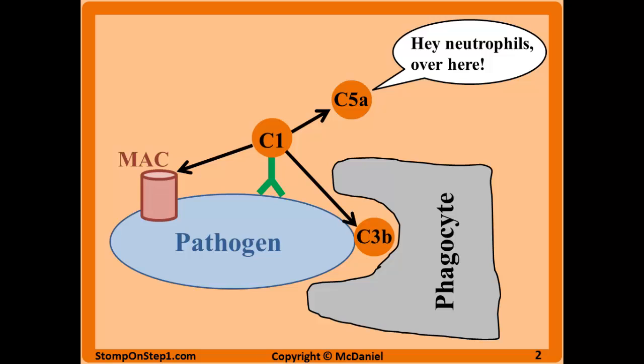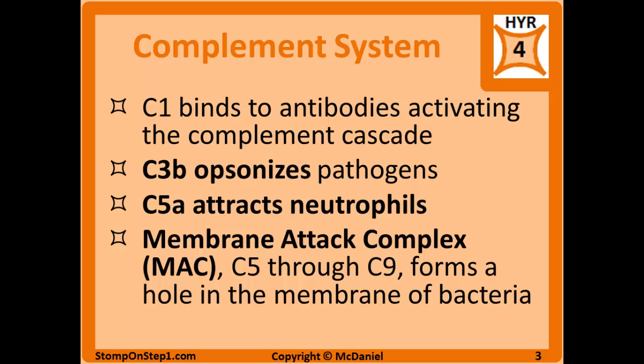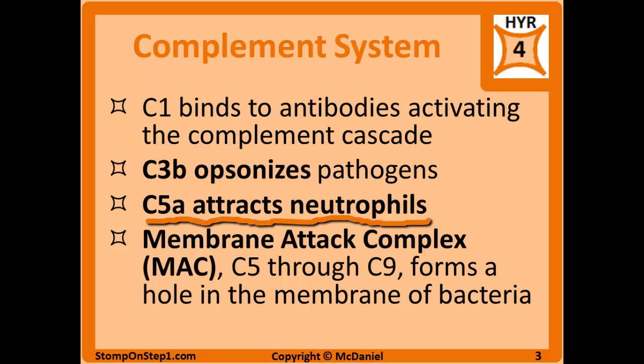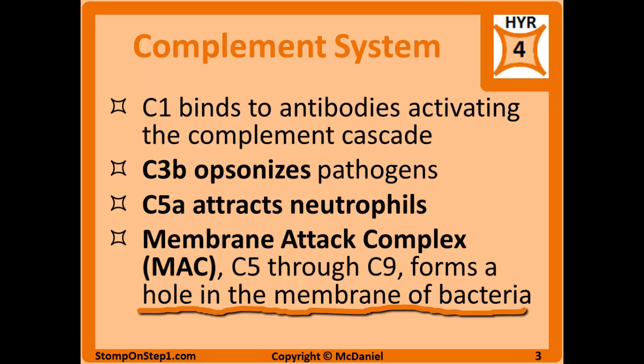The last main result of the complement cascade is the formation of MAC, or membrane attack complex. This complex is formed through a combination of activated C5 through C9, and the MAC forms a hole in the membrane of the bacteria, causing lysis or bursting open of the pathogen. To summarize: C1 binds antibodies starting the cascade; C3B opsonizes the pathogen; C5A attracts neutrophils as a chemotactic factor; and MAC forms holes in the bacterial membrane to cause lysis.